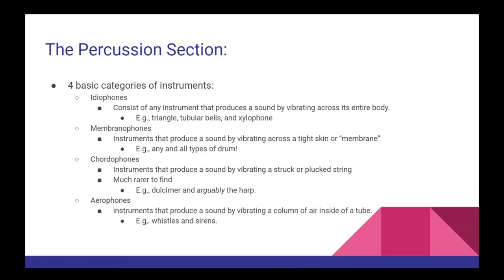Idiophones consist of any instrument that produces a sound when struck by vibrating across the entire body of the instrument. Some examples would be the triangle, tubular bells, and the xylophone. Membranophones consist of any instrument that produces a sound when struck by vibrating a tight skin or membrane. Examples would include any and all types of drum.